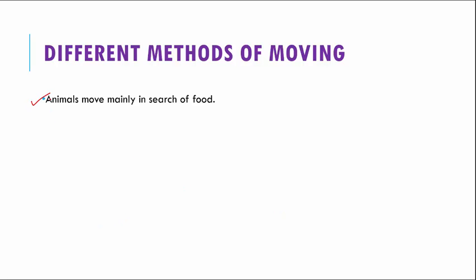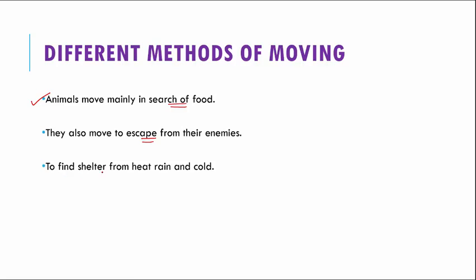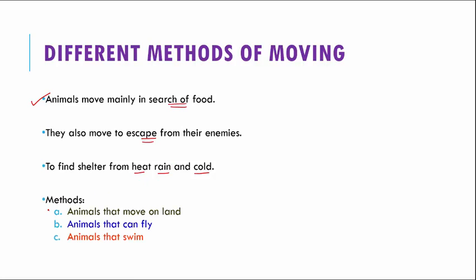Animals move mainly in search of food, to escape from their enemies, or to look for shelter against heat, rain, and cold. Animals move in many different ways — some move very fast, some very slowly, some over small areas while others travel very long distances. We will look at different modes of movement based on habitat: animals that move on land, animals that can fly, and animals that can swim.